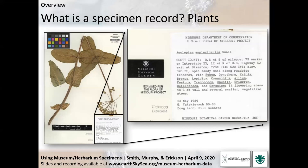I want to make sure we're all starting on the same level in terms of understanding what a biodiversity specimen record is. Starting with plants — they're typically preserved as dried and pressed specimens on a sheet of paper, which usually gives plenty of room for describing the collection. A great specimen has a species name, a description of the locality, associated species, something about the habitat, when it was collected, and who collected it. The only thing typically missing from the specimen label is a latitude and longitude.